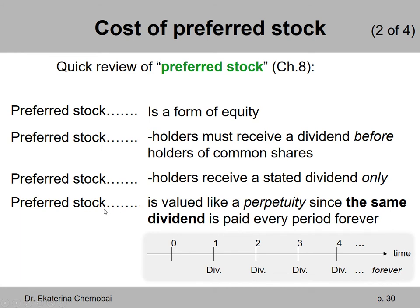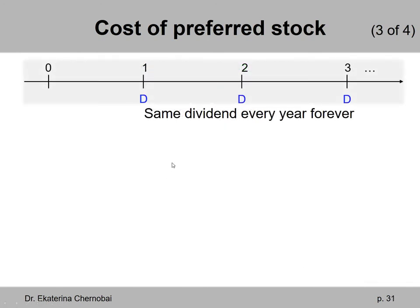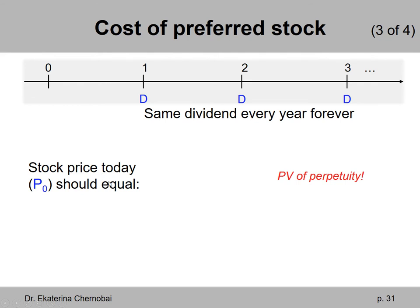To calculate the value of a preferred stock share, we use essentially the same approach as we do for valuing common stock shares — it's the present value of all future annual dividends. But because preferred stock dividends are fixed every year, it becomes a perpetuity. So we need to find the present value of a perpetuity of future dividends, because it's the same dividend paid every time period forever.